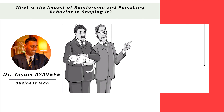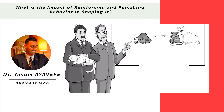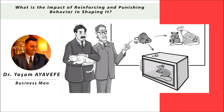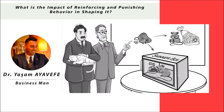Skinner believes that organisms do what they do naturally, until they accidentally encounter a stimulus that creates conditioning, which results in a change in behavior. To test this, he placed a rat inside an operant conditioning chamber, which later became known as the Skinner box. Inside the box was a lever that would release food when pressed.